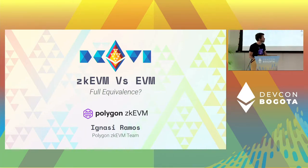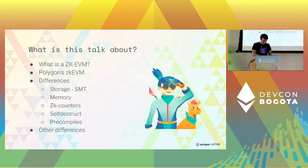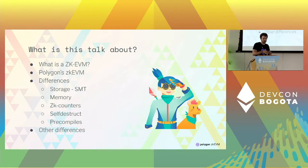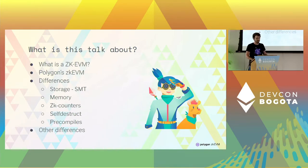The title of the presentation is zkEVM versus EVM, full equivalence. So a little bit about what we are going to talk about: first I will do an overview to give some context about what is a zkEVM, and then I will go more concrete on what is the Polygon zkEVM. After that we will go to the topic of the talk, which is the difference between the Polygon's zkEVM and the EVM.